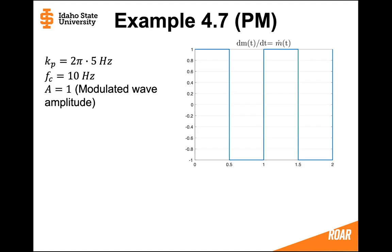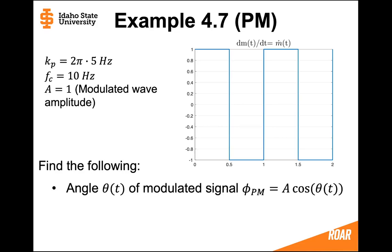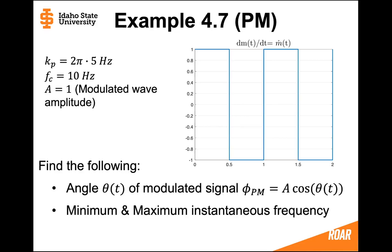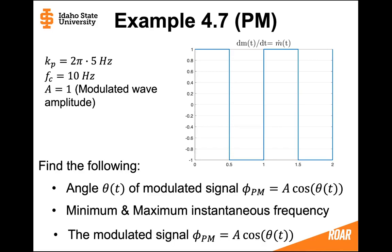Let's continue with example 4.7 by investigating phase modulation. We'll consider a digital-like signal — a pulse that goes from positive 1 to negative 1 — and what we're given is the derivative of the message. We need to find: the angle of the modulated signal, the minimum and maximum instantaneous frequency, and the modulated signal for the phase modulated case.